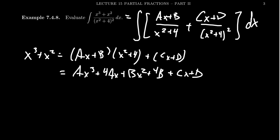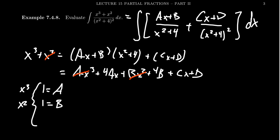Let's combine like terms. For x cubed: we get 1 on the left-hand side and just a on the right-hand side. So that's pretty nice — we already know what a is. For x squared: on the left-hand side we get 1 again, and on the right we find b, so 1 equals b. For the x term: on the left there's nothing, so we get 0. On the right-hand side we get 4a plus c. Since a equals 1, that gives us 0 equals 4 plus c, which says c equals negative 4.